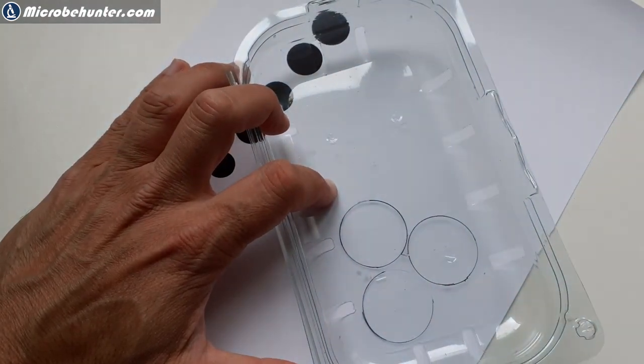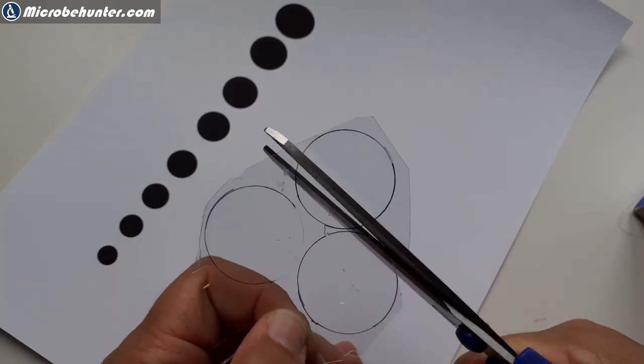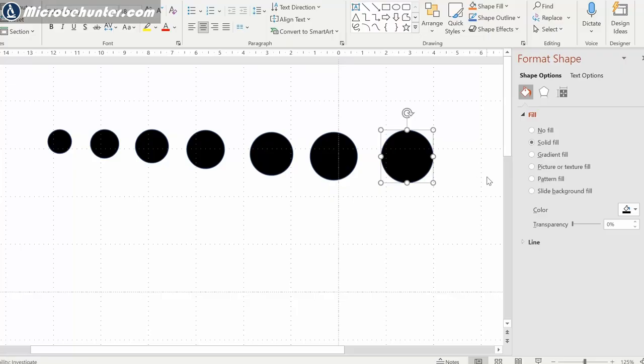I've decided to cut out three of them. Scissors works best and yeah all you do is you just make sure that the size is correct that it's able to fit into the filter holder of your microscope.